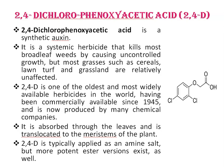2,4-dichlorophenoxyacetic acid (2,4-D) is a synthetic auxin. It is a systemic herbicide that kills most broadleaf weeds by causing uncontrolled growth, but most grasses such as cereals, lawn turf, and grassland are relatively unaffected. 2,4-D is one of the oldest and most widely available herbicides in the world, having been commercially available since 1945. It is absorbed through the leaves and translocated to the meristem of the plants. 2,4-D is typically applied as an amine salt, but more potent ester versions also exist.